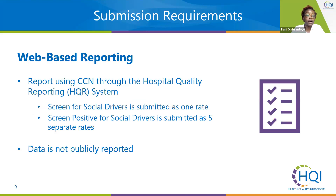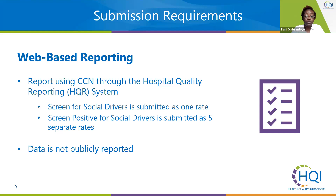Hospitals will use their CCN to report this data through the Hospital Quality Reporting System, or HQR system. The requirement is to report the aggregate numerators and denominators for both measures. The HQR system will calculate the rate for each measure based on those aggregates. The screening for social drivers of health measure will be calculated as one rate, and the screen positive measure will be five rates. This data will not be publicly reported.